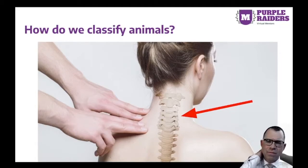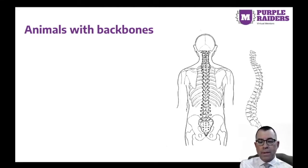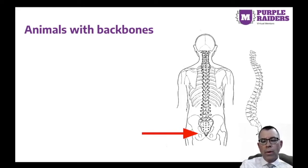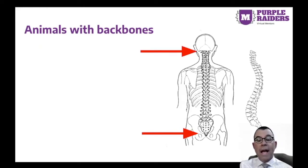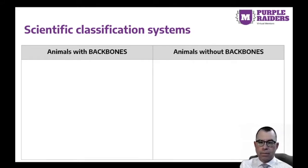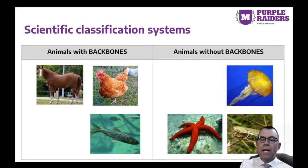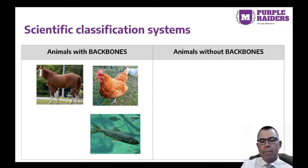Touch the back of your neck. Do you feel bumps? These are part of your backbone. Your backbone goes from your hips all the way up to your head. Not all animals have a backbone. One way scientists classify animals is as animals with backbones and animals without backbones. We will take a closer look at animals with backbones. Scientists call animals with backbones vertebrates, and they classify them into many groups.